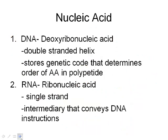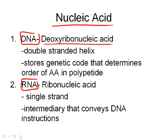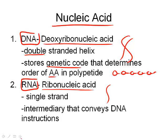Now for nucleic acids — there are two types: DNA (deoxyribonucleic acid) and RNA (ribonucleic acid). DNA is double stranded whereas RNA is single stranded. DNA stores the genetic code to determine the order of amino acids. RNA converts that DNA code into something that can travel. We'll look at these processes in detail in the DNA unit.